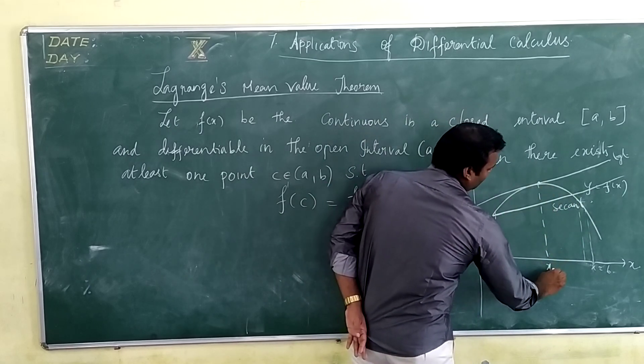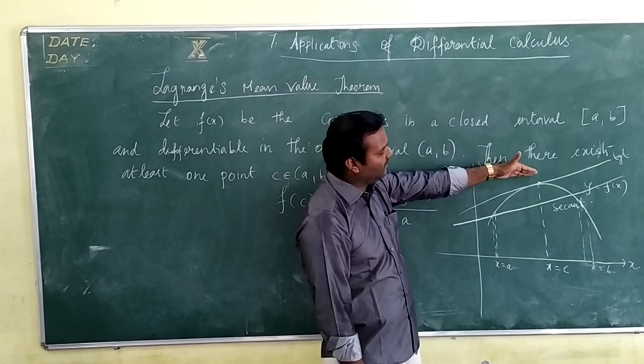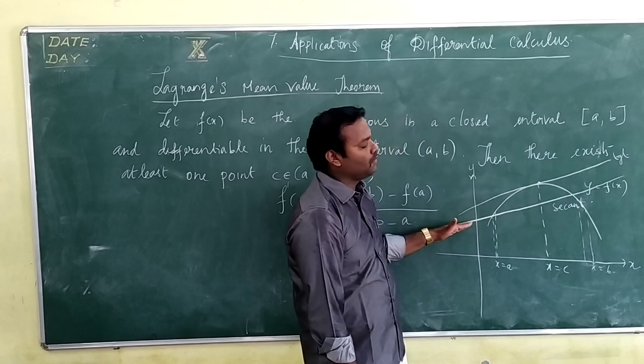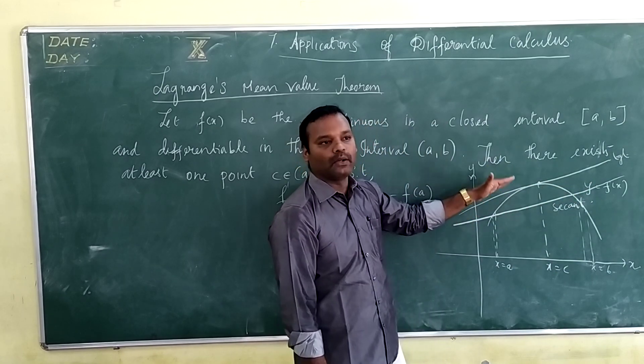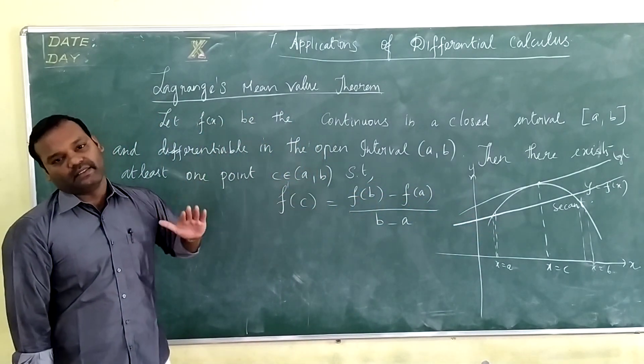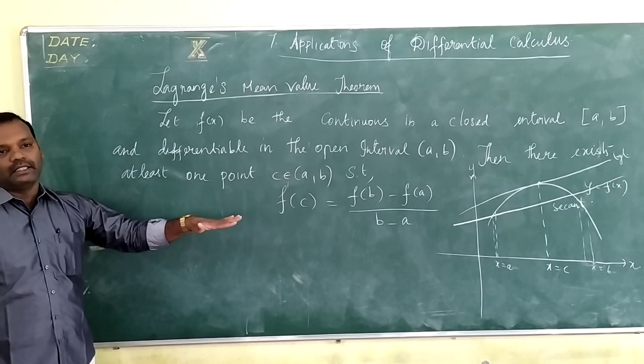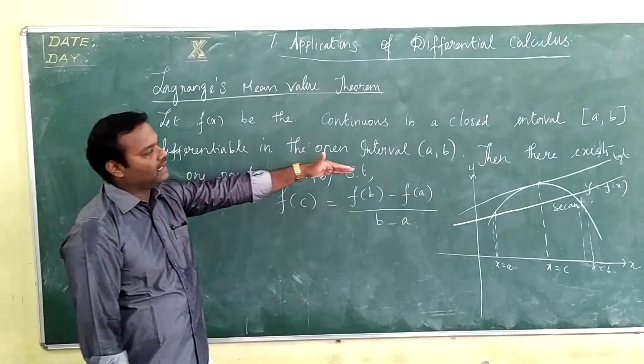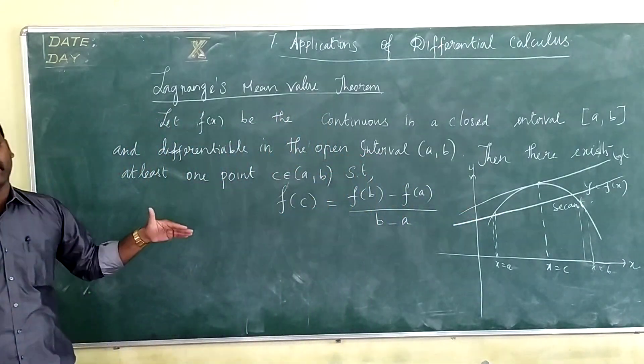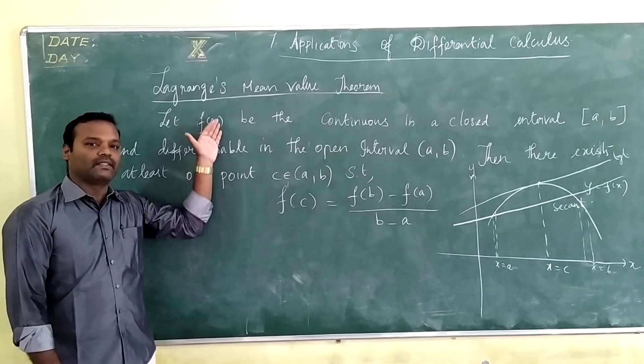This is the point x equals c. So this theorem says that there is a tangent at the point c which is parallel to the secant line. So we are going to find such a point c using Lagrange's Mean Value Theorem where the tangent is parallel to the secant line. The tangent line is the line which touches the curve exactly at one point, and secant line is the line which touches the curve exactly at two points. So we are going to solve problems based on this theorem.